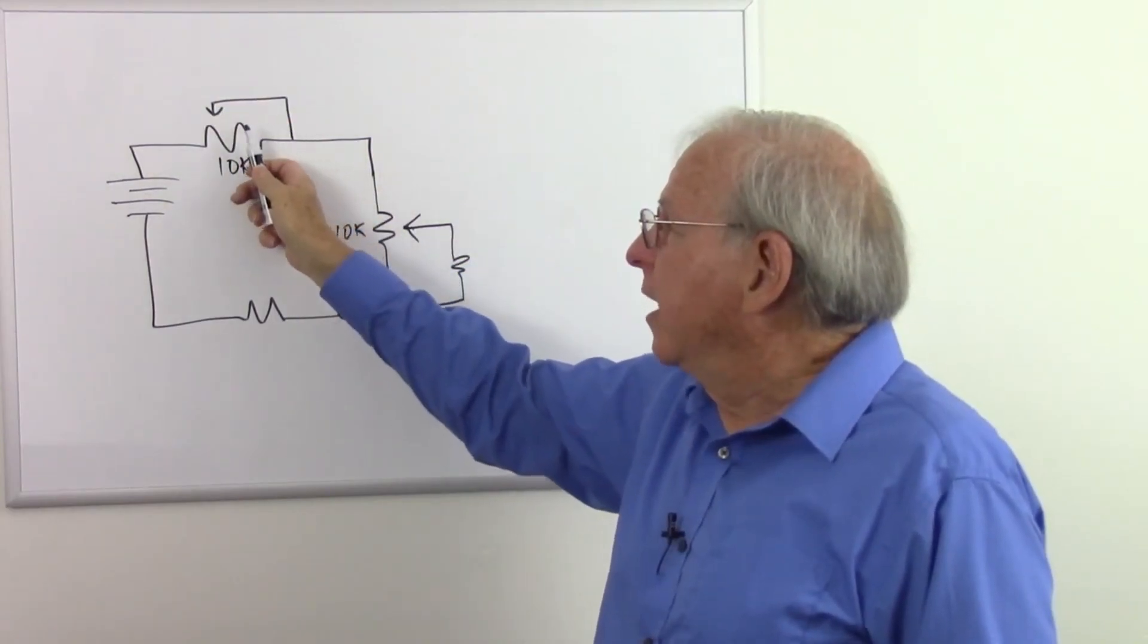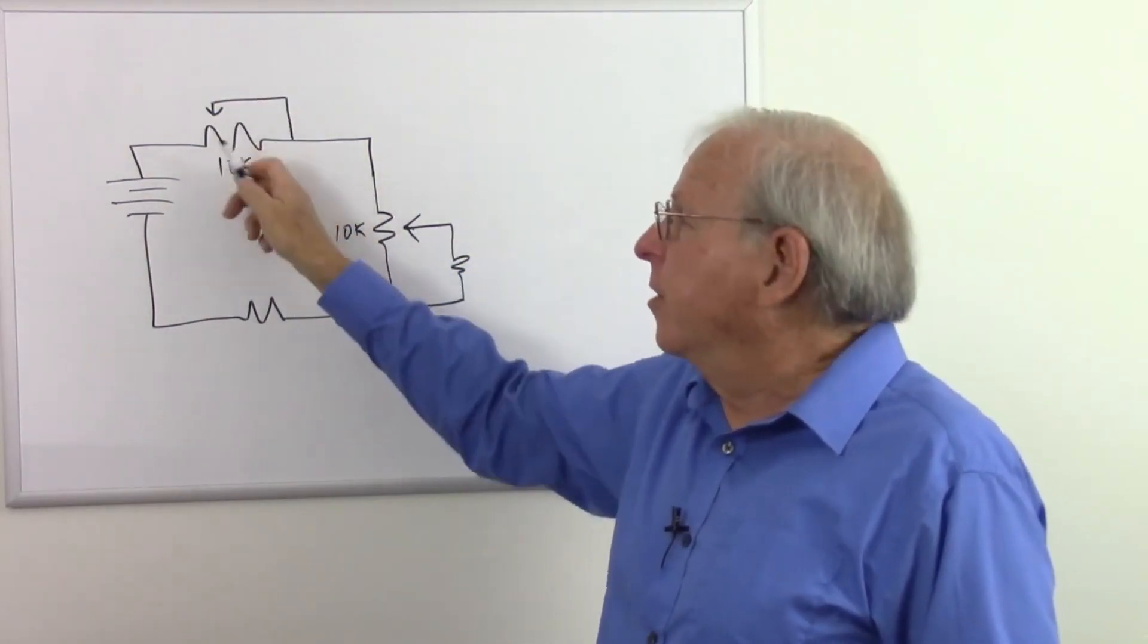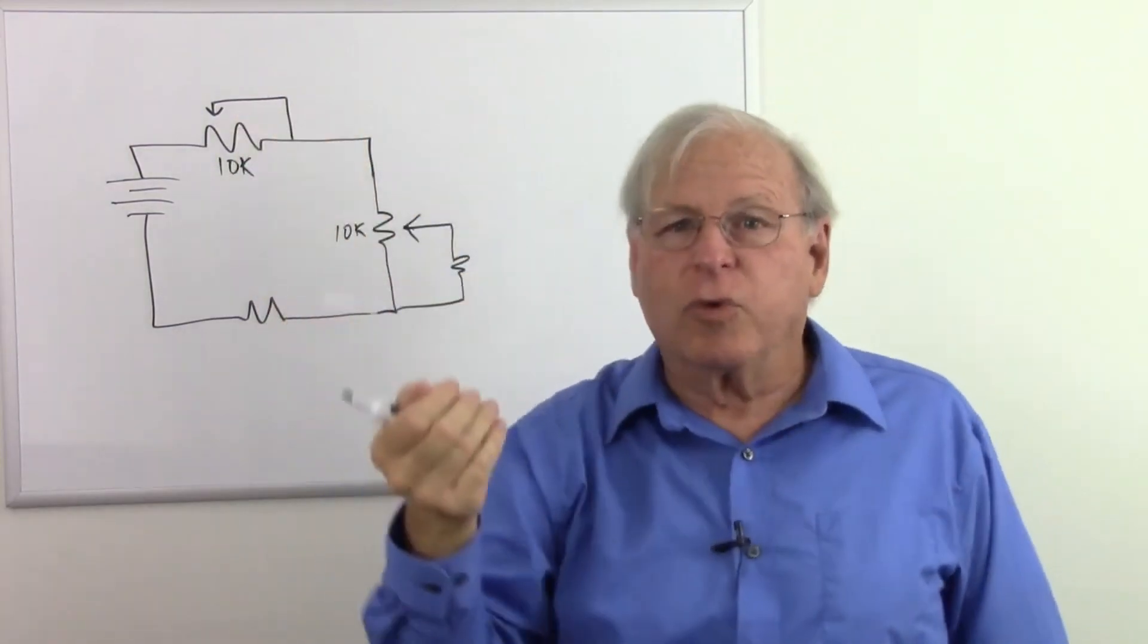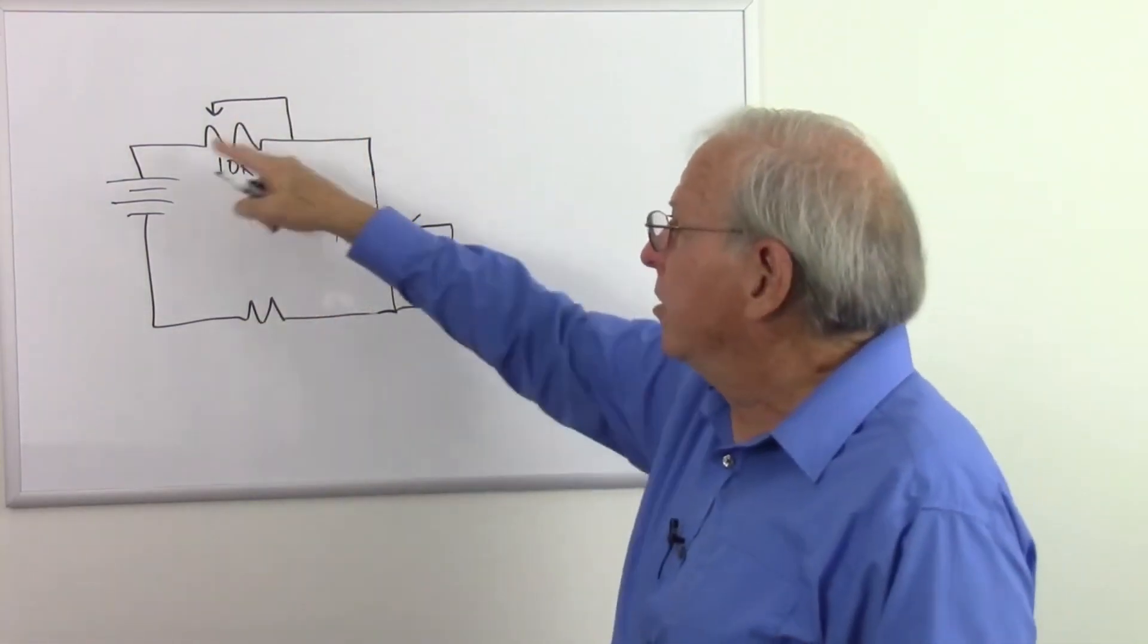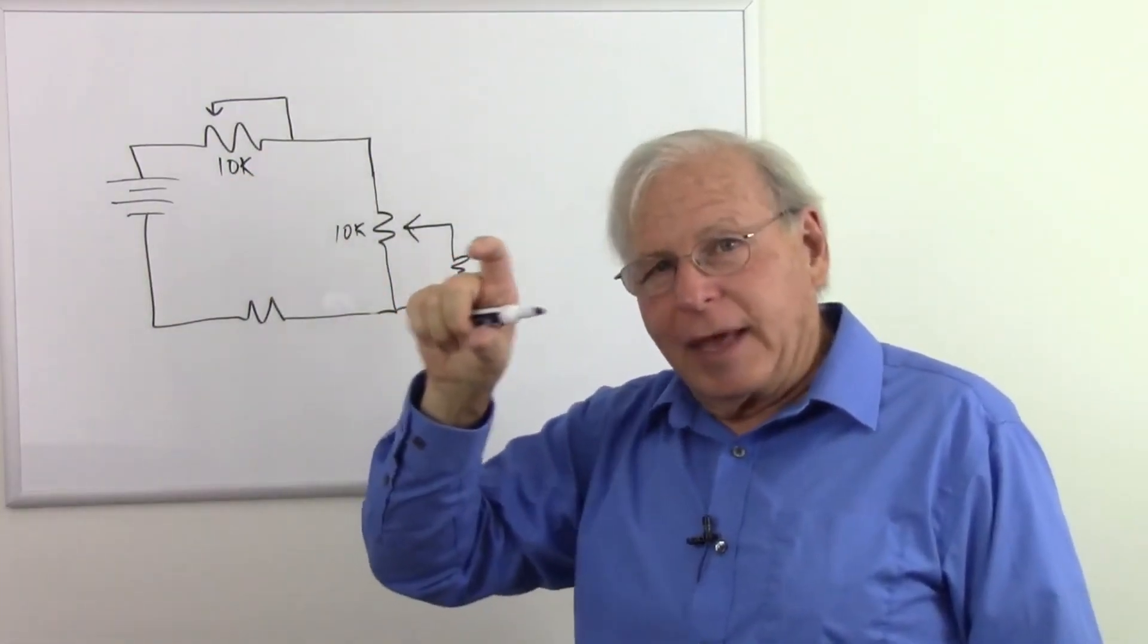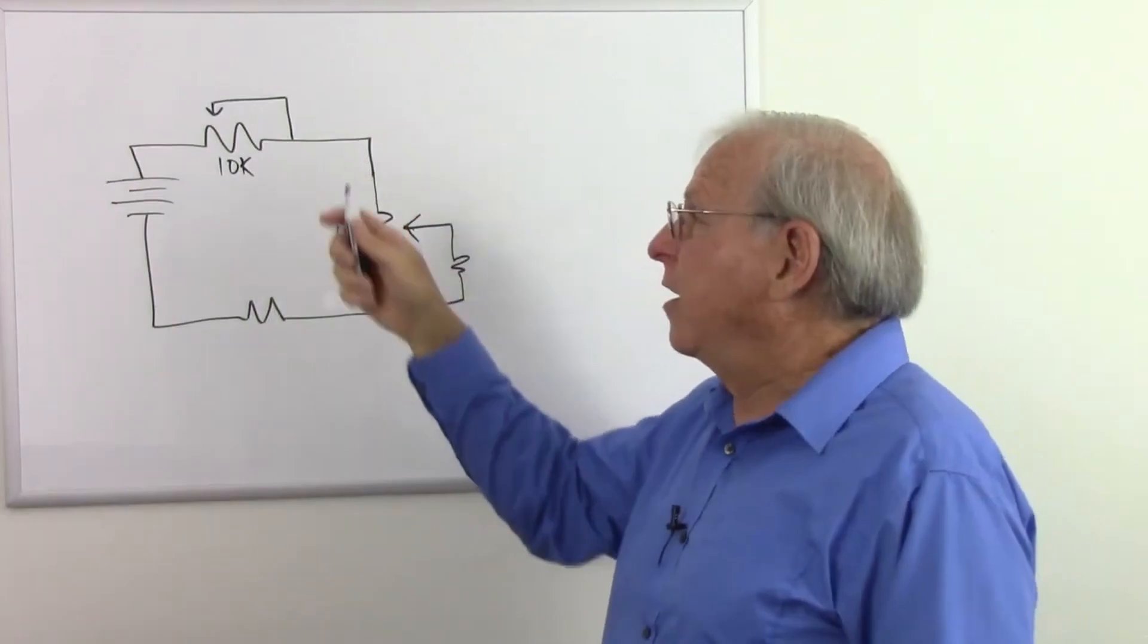This one, as we turn it one way, it's going to get higher and higher resistance. We flip it around, we turn it the same direction, it'll get lower and lower resistance. So it just depends on which way you want the knob to do whatever you want on which side. You have to look at the schematic and your physical layout to see which way that's going to work.